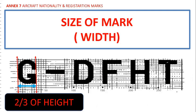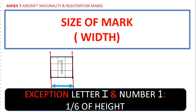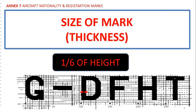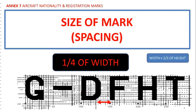The characters shall be two-thirds as wide as they are high. An exception to width applies to the letter I and the number 1, which shall be one-sixth as wide as they are high. The thickness of the lines shall be one-sixth of the height of the character. The space between characters shall be at least one-fourth of a character width, where the character itself is two-thirds of the height.